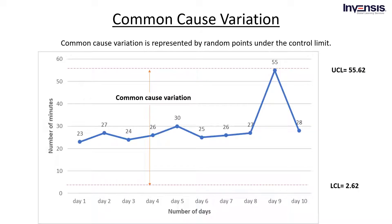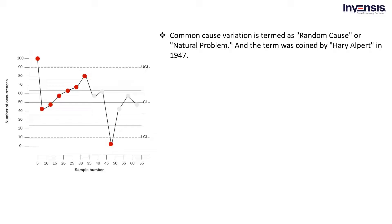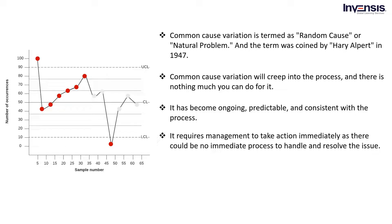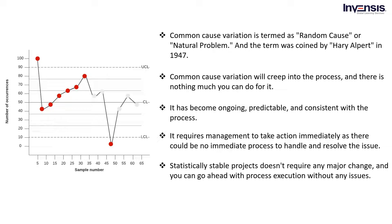Common cause variation is represented by random points under the control limit. It is termed as random cause or natural variation, and the term was coined by Hari Alpert in 1947. Although variation is considered an issue, it has become an integral part of the business process — it is ongoing, predictable, and consistent. Here, the process is under statistical control. You can't take a particular action to stop the failure from occurring repeatedly; it requires management to act. If the chart contains only common cause variation, your business process is termed statistically stable and doesn't require any major change.